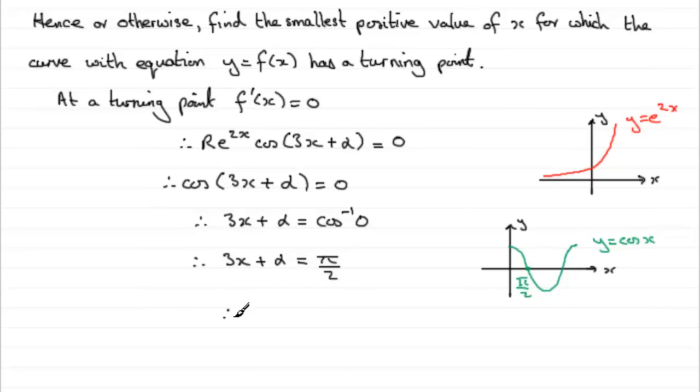And to get x, all we've got to do is subtract alpha and divide by 3. So x equals pi upon 2 minus alpha all divided by 3. Now we know what alpha is. Alpha was the value that we got earlier. I'm going to write this as a third, a third of pi over 2 minus alpha.